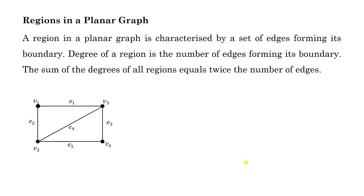Now, regions in a planar graph. A region in a planar graph is characterized by a set of edges forming its boundary. For example, edges A1, A2, and A4 form region R1; similarly there is a second region R2; and one more region which is the outer infinite region R3. For each graph, one infinite region will always be there.